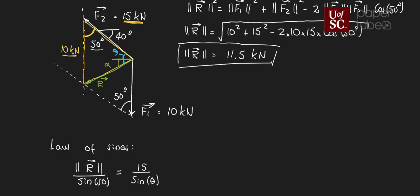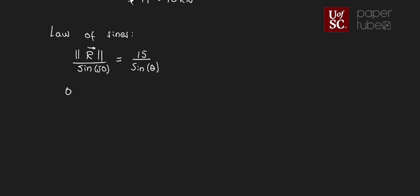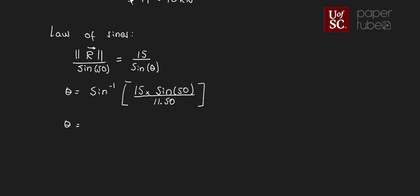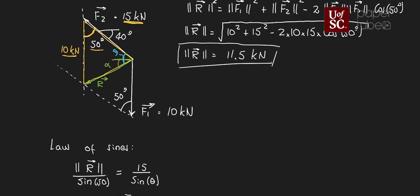Solving for theta, we get theta equals the inverse sine of 15 times sine of 50 degrees divided by the magnitude of R, which we found to be 11.5 kilonewtons. Calculating this gives theta equal to 87.69 degrees. This means the drawing is not quite to scale, as that angle is nearly 90 degrees.